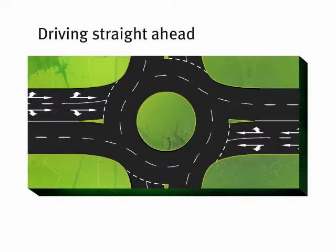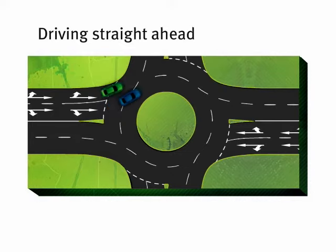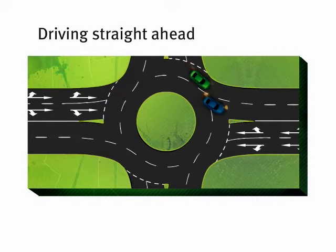If you want to drive straight ahead on a roundabout, you can approach without signalling. But make sure you signal left as you exit, and turn your indicator off after you've left the roundabout.